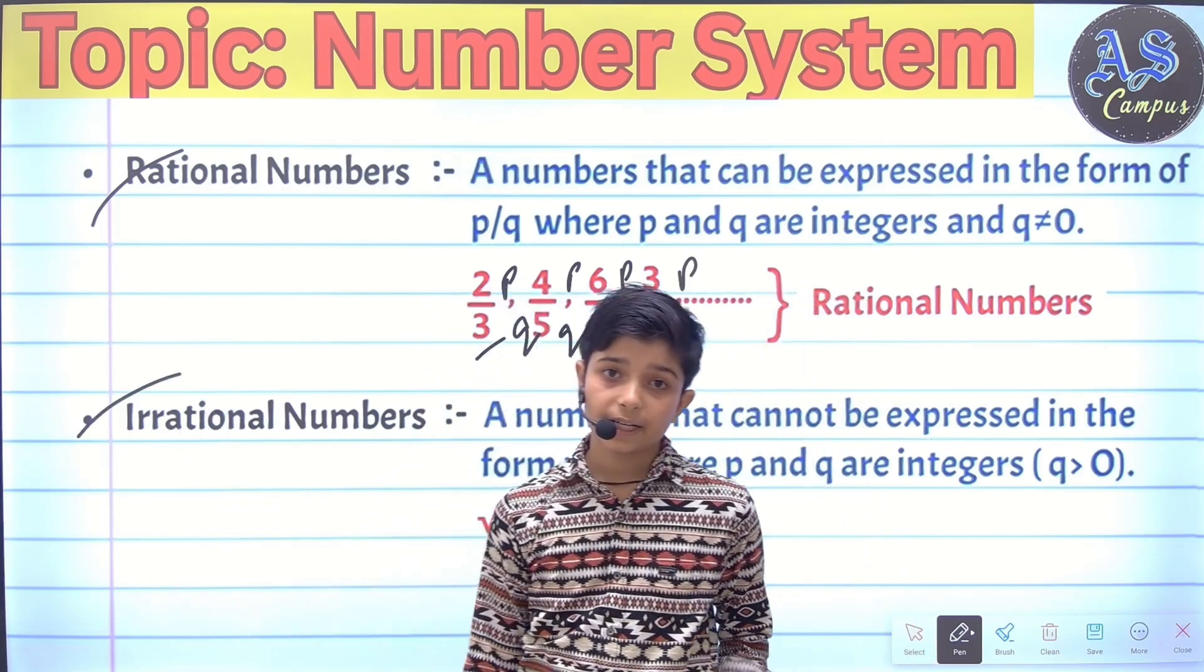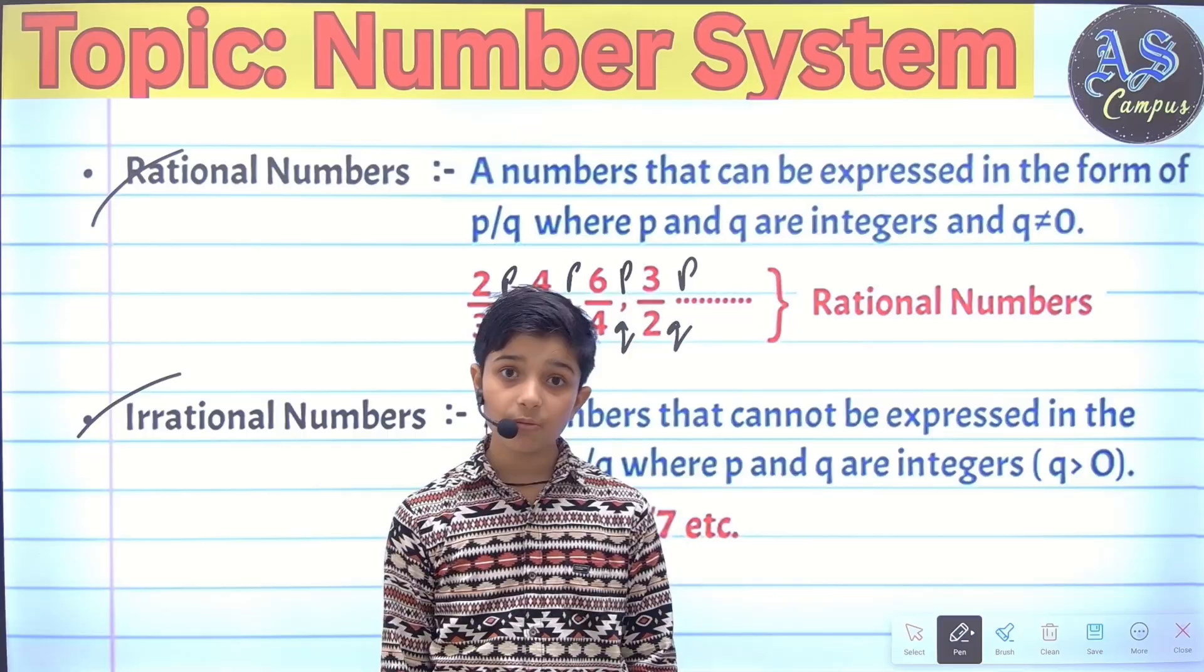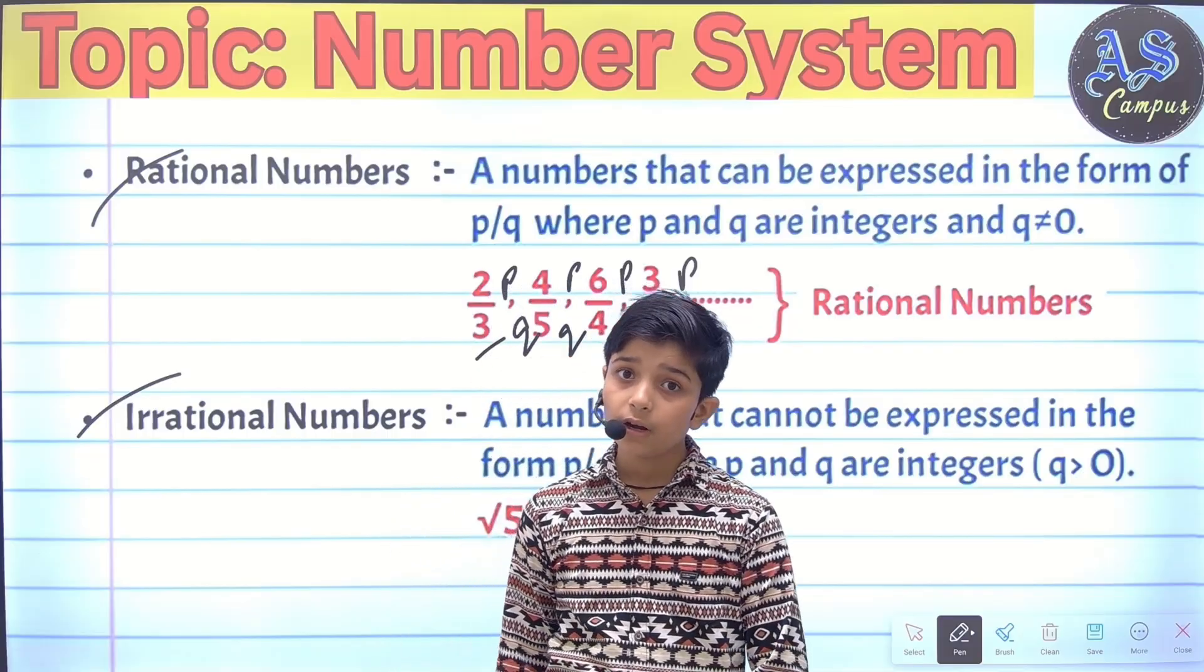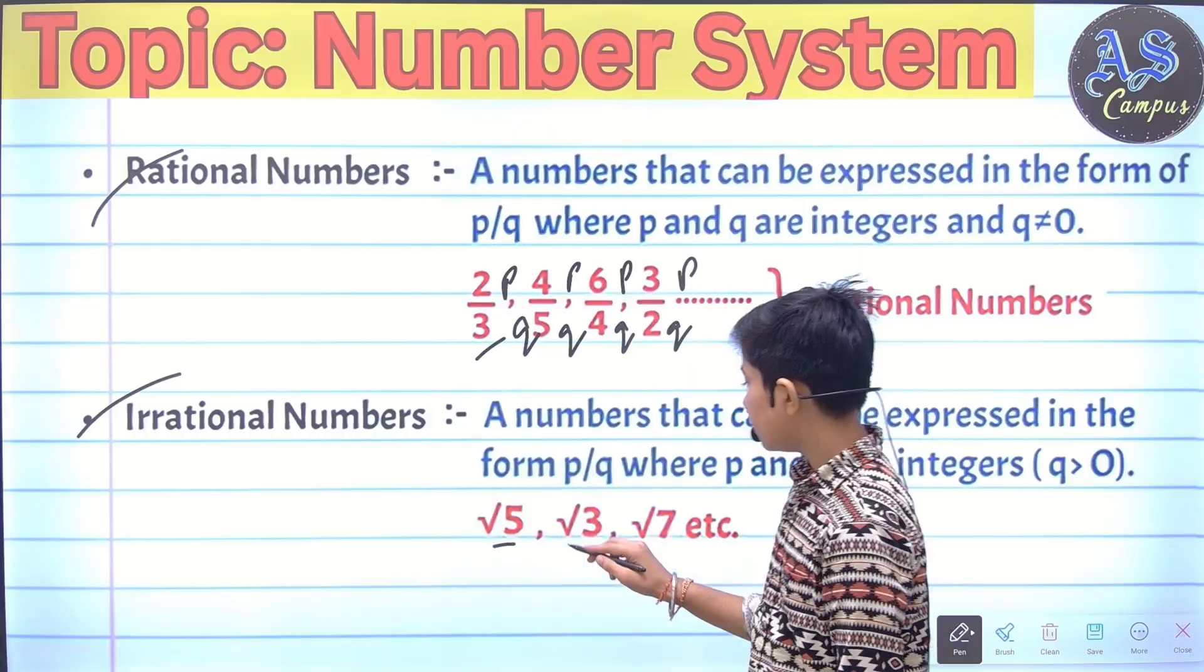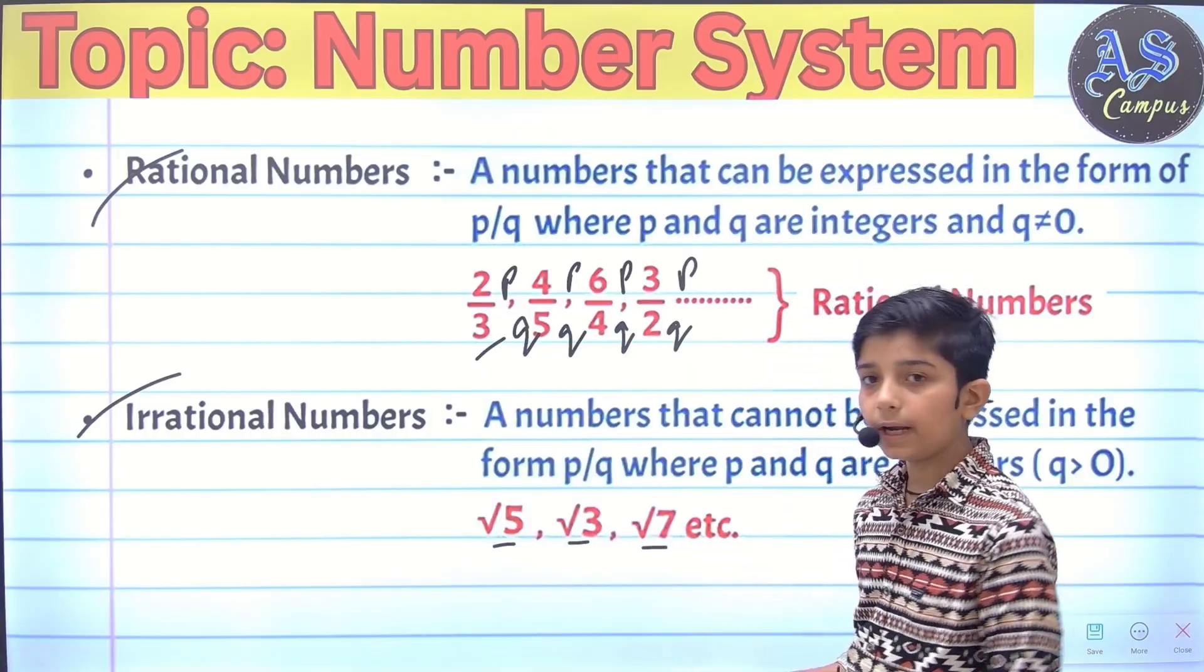Irrational numbers: A number that cannot be expressed in the form of p by q, where q is greater than zero. Examples: square root of 5, square root of 3, square root of 7, etc.